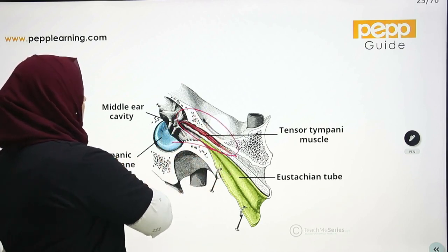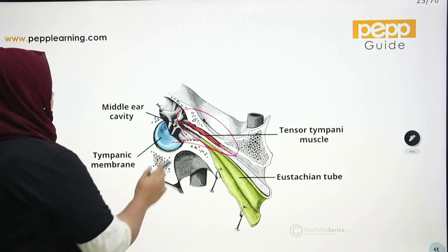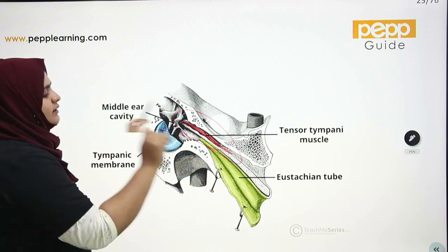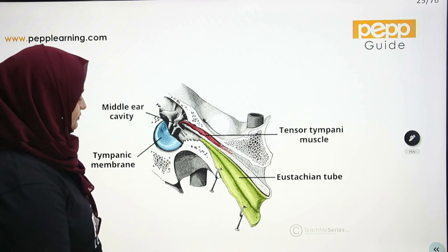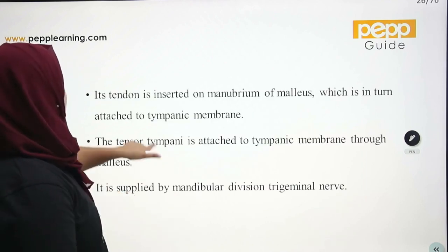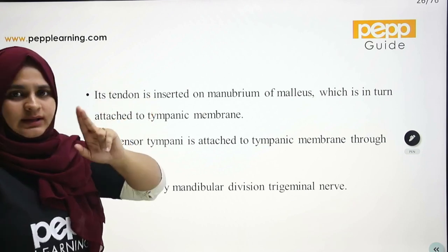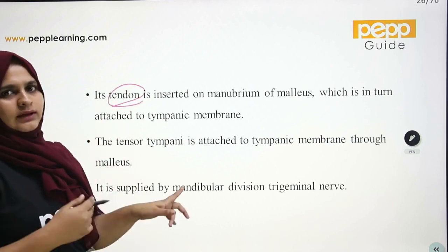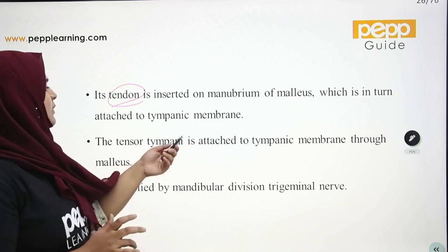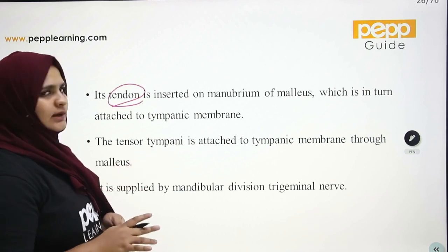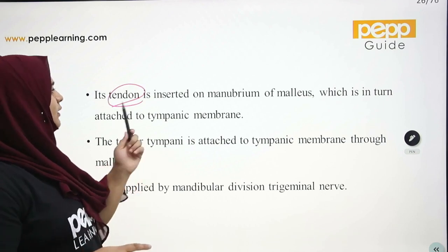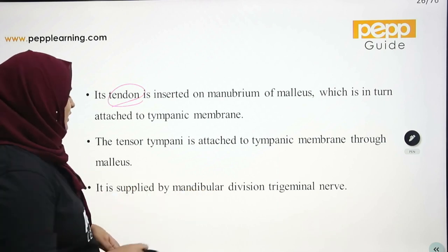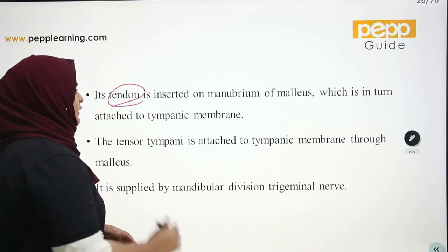The tensor tympani tendon is inserted on the manubrium of the malleus, which is in turn attached to the tympanic membrane. It is supplied by the mandibular division of the trigeminal nerve.